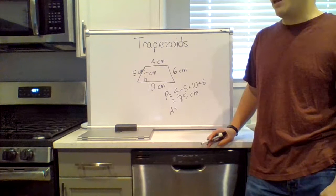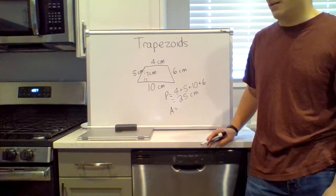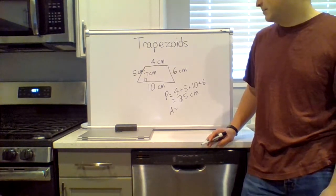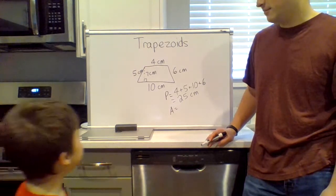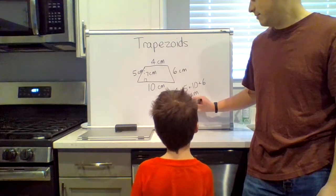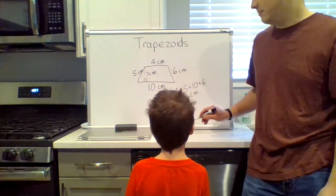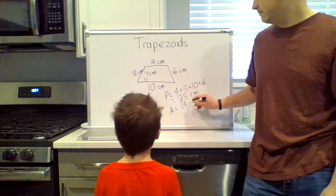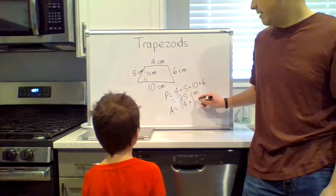Okay, now Nathan, the two bases are the top and bottom. What numbers are on the top and bottom? Four and ten. Yep, ten and four.